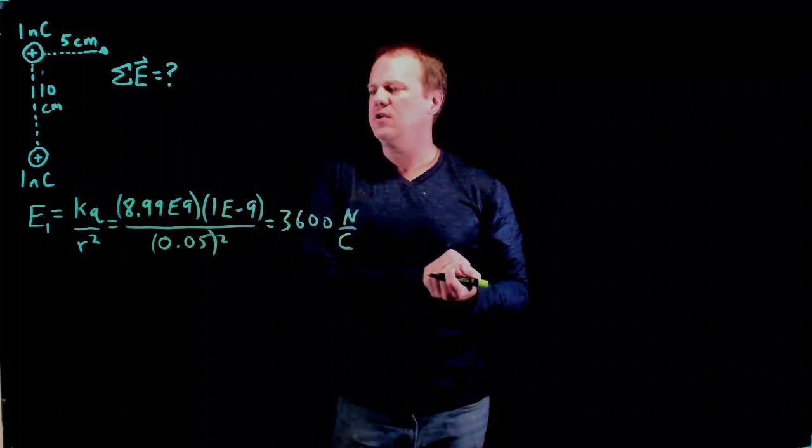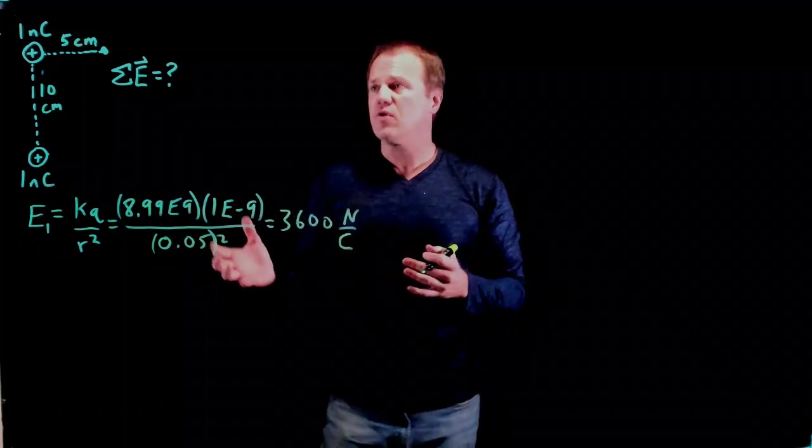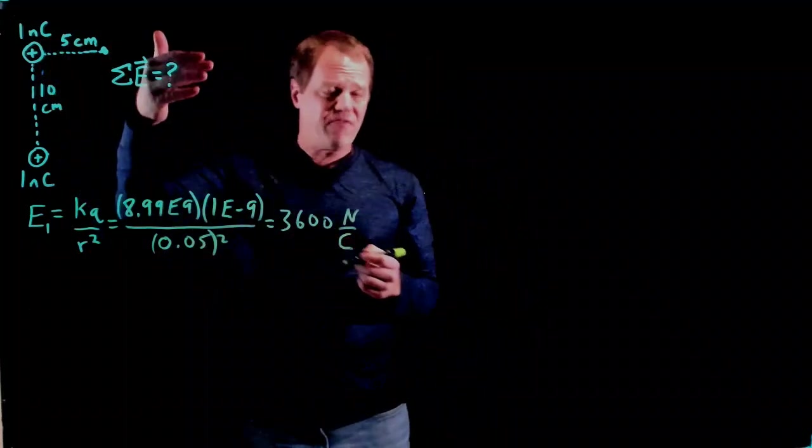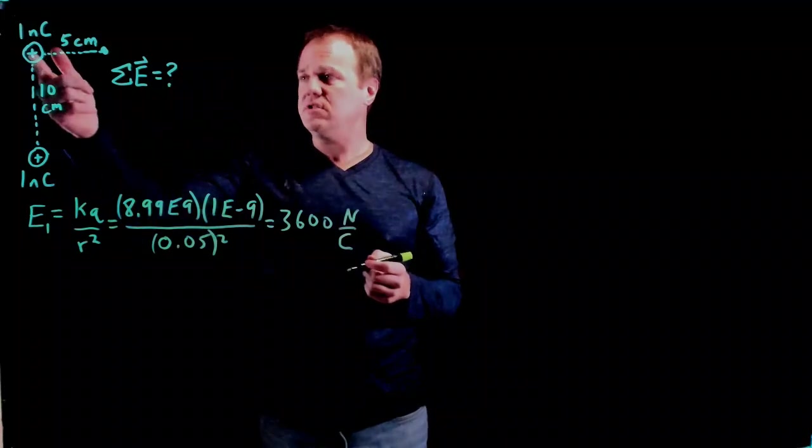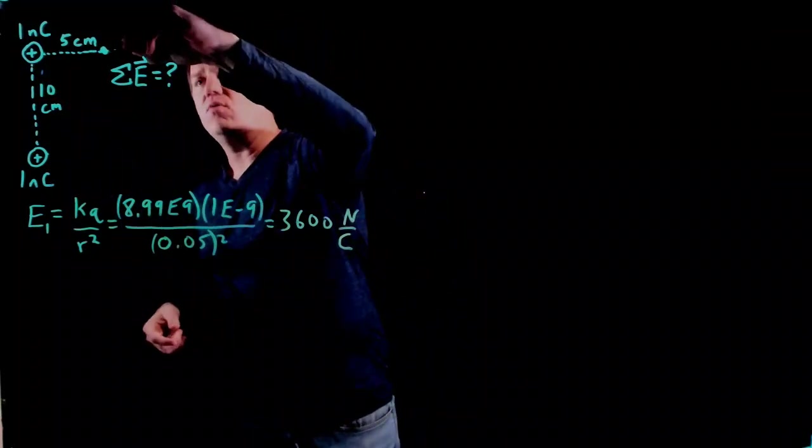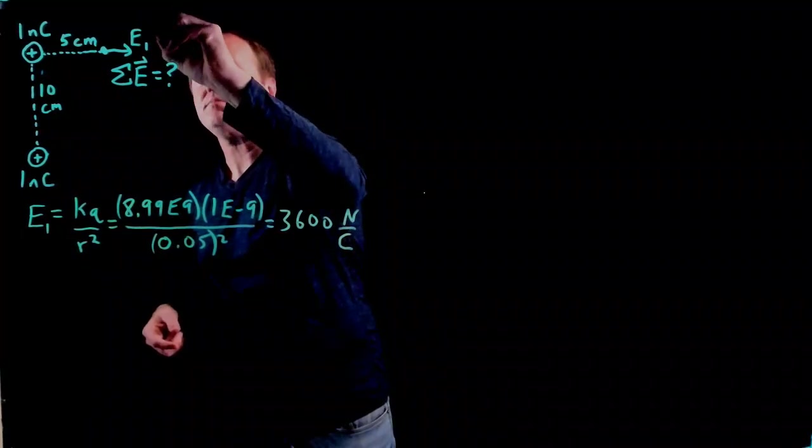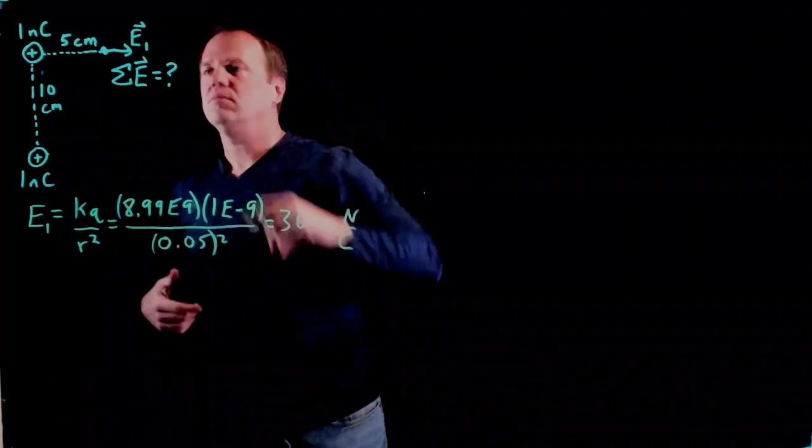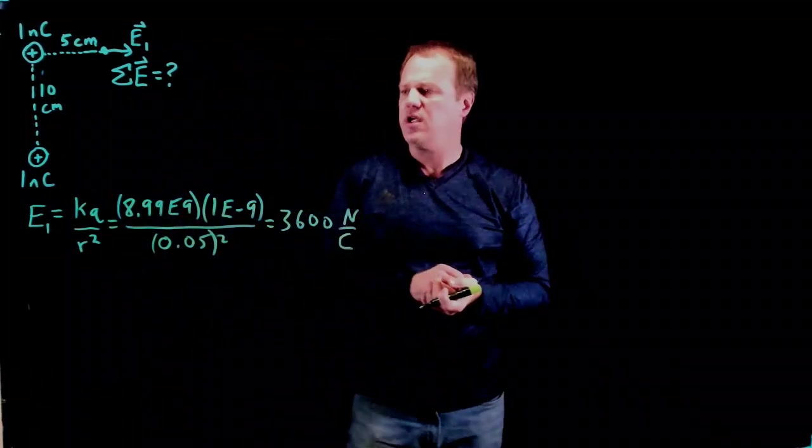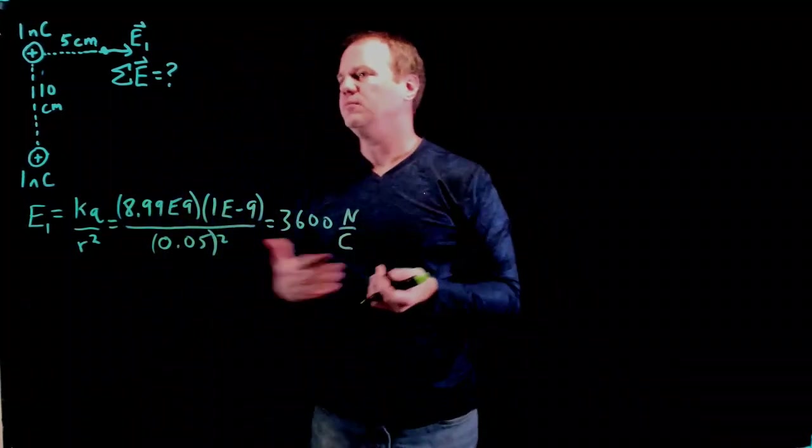So electric field is a vector, so you need to point out the direction. It'll point away from positive charge and towards negative, this is a positive charge. So E1 will point this way. And so everything's on the x-axis, it's going to be pretty easy to do the vector arithmetic for that one.